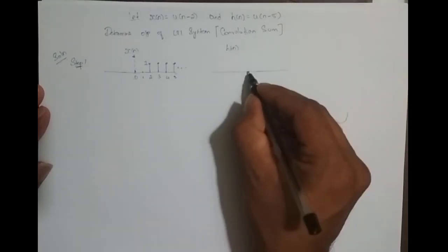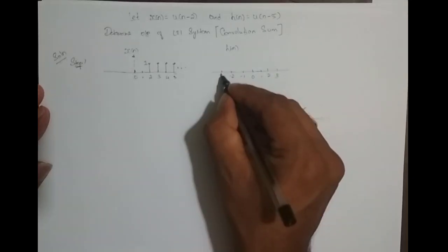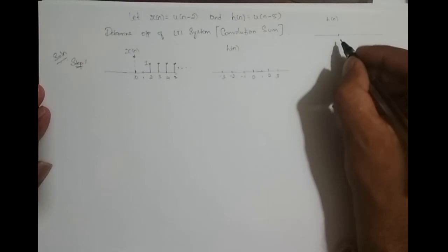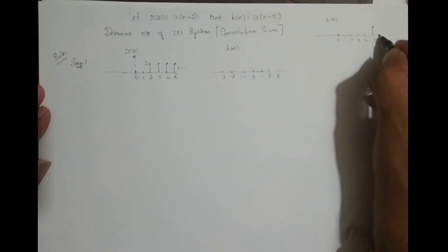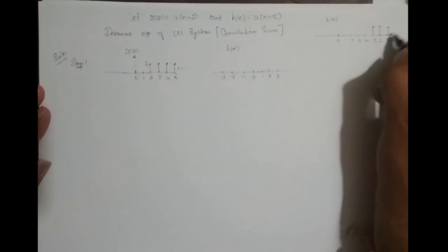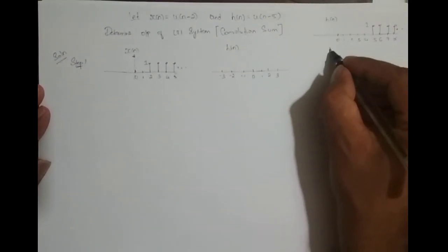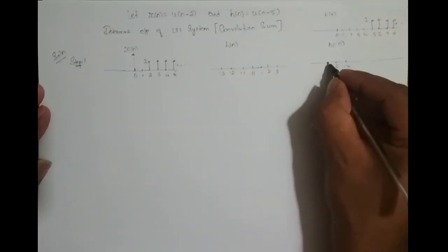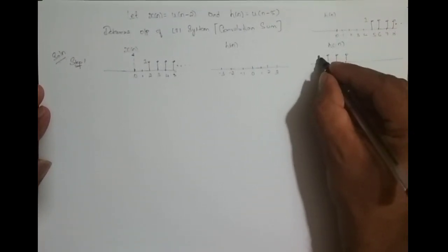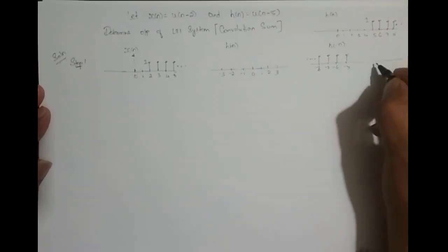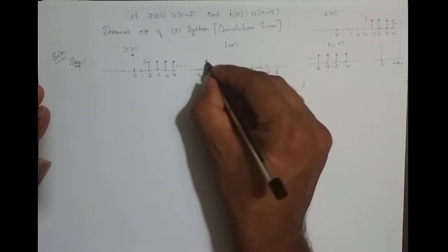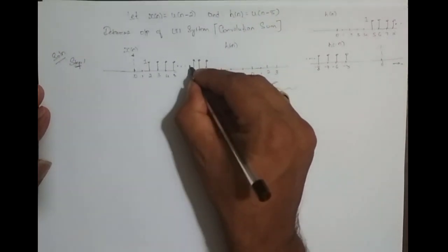Now what is h of n? h of n is u of n shifted right 5 times, so it starts from 5 and goes to infinity. What I need is h of minus n. h of minus n is the mirror image of h of n, so it starts from minus 5, minus 6, minus 7, minus 8 and goes to minus infinity. This is at n equal to 0.